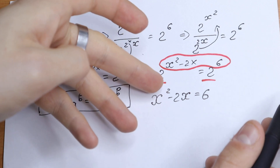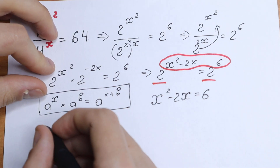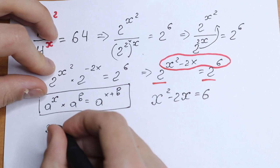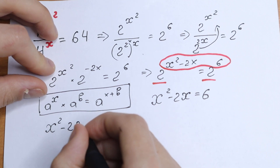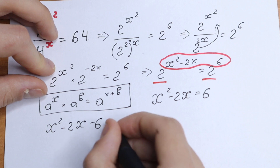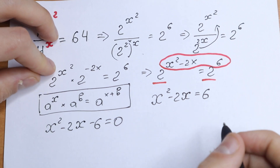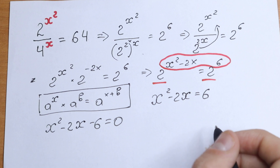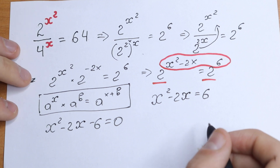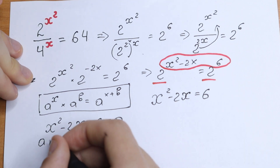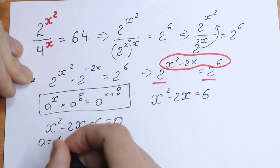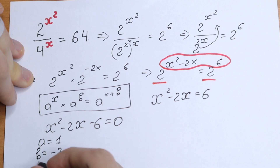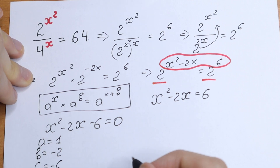This looks like a quadratic equation. We can bring the 6 to the left side: x squared minus 2x minus 6 equals 0. Let's solve it. We identify our coefficients: a equals 1, b equals minus 2, and c equals minus 6.